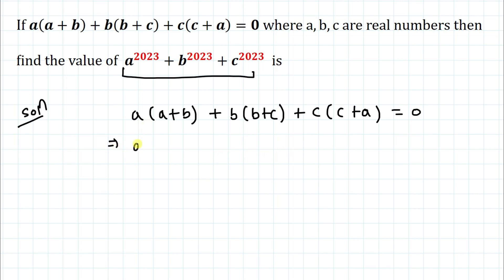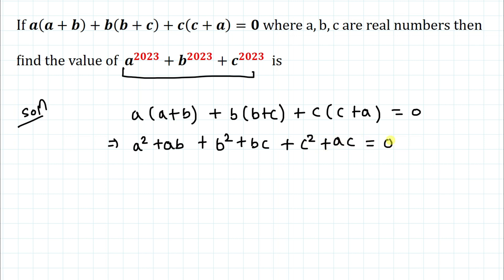In the next step, expanding each bracket: a² + ab + b² + bc + c² + ac = 0. Now, in the next step, I'll multiply both sides by 2, giving us 2a² + 2ab + 2b² + 2bc + 2c² + 2ac = 0.